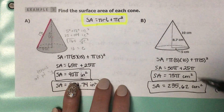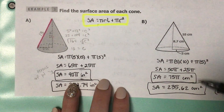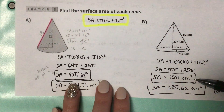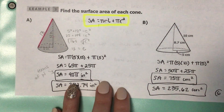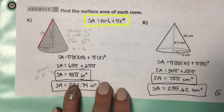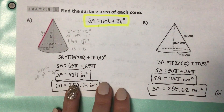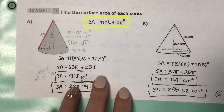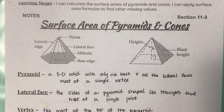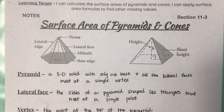Both of these are the same answer — one is rounded and one is left in terms of pi. According to what your directions tell you to do, that's how you'll want to leave your answer. That is all for today's set of notes. I hope this has been helpful, and if you have questions, always feel free to ask.